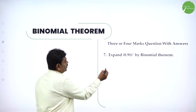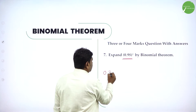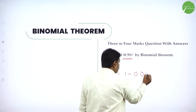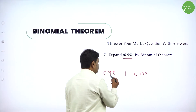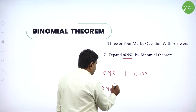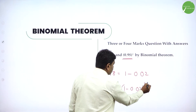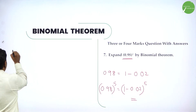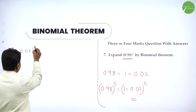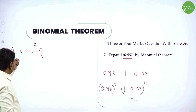So next they want you to expand 0.98 power 5 by binomial theorem. You know 0.98 is near to 1. So 1 minus 0.02 gives this number. So instead of 0.98, I can write 0.98 power 5 as 1 minus 0.02 power 5. Now I will expand this using binomial theorem. When you have minus in between, you take the second term as positive — plus minus alternates.